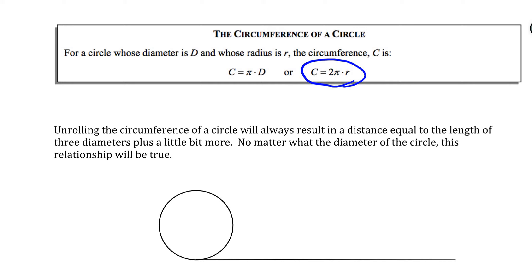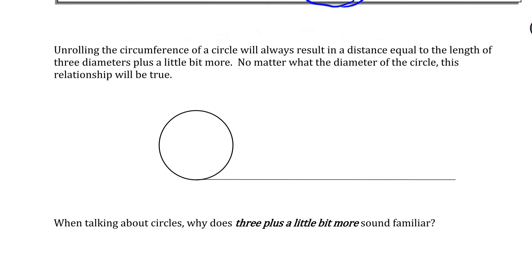Now let's talk about why the circumference formula is what it is. So it says, unrolling the circumference of a circle will always result in a distance equal to the length of 3 diameters plus a little bit more, no matter what the diameter of the circle is. So why does this happen? Let's think about the formula. It's π times the number of diameters. When we say something like 3 plus a little bit more, that sounds familiar to 3.14 or π. So there's this relationship with the number of diameters that fit along the outer edge of a circle and this number π. Why is π in all these circle equations?